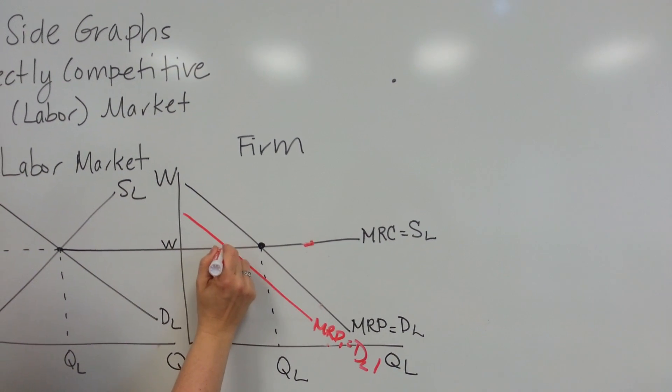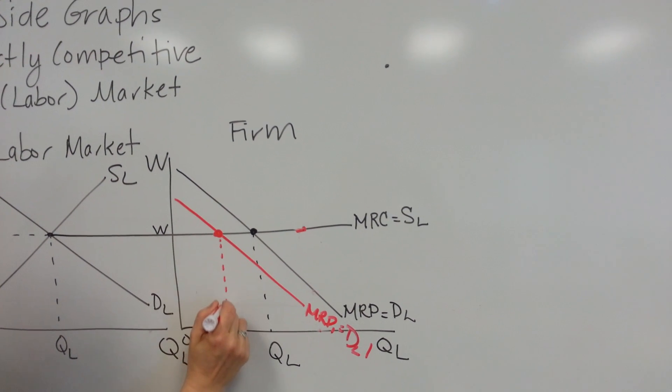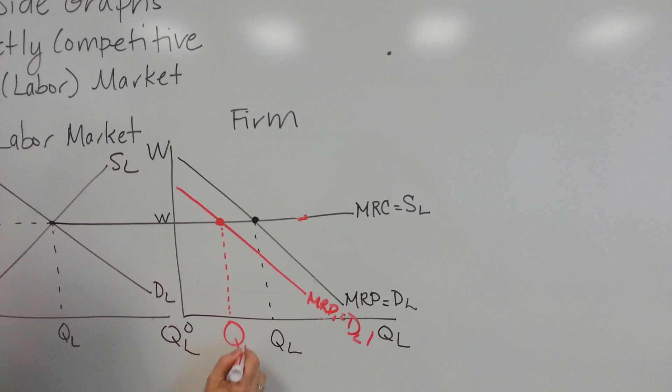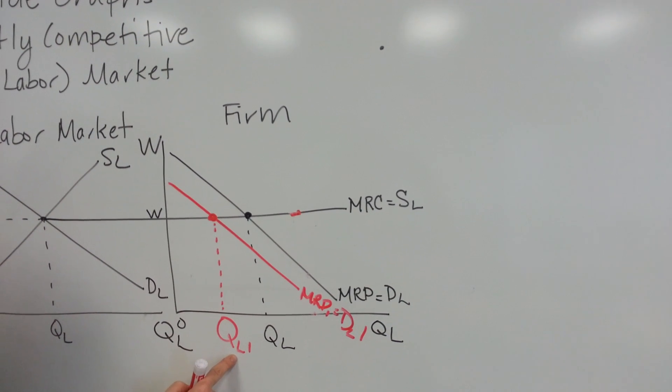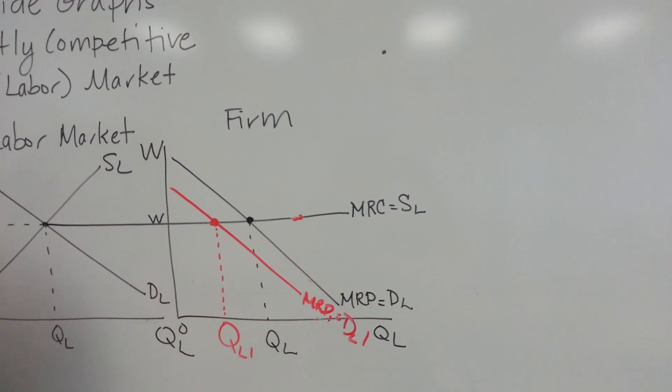That makes a new profit maximizing point here, which tells me that this would be the new number of workers that I would hire, which would be less than the previous profit maximizing point at the original MRP.